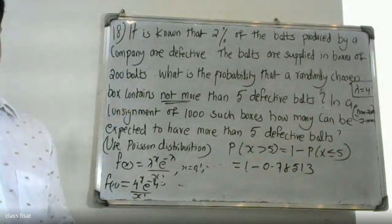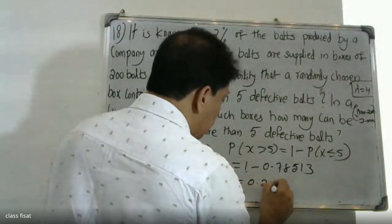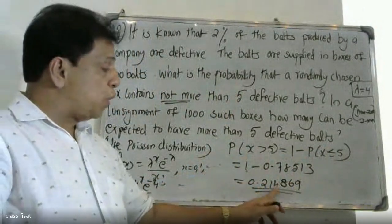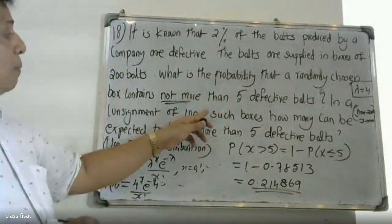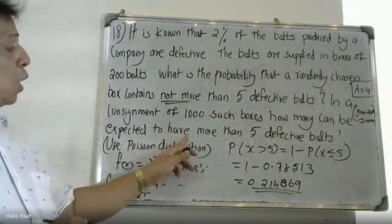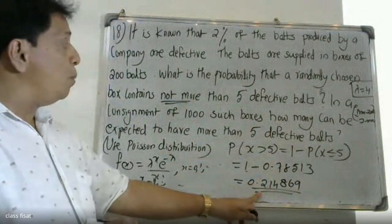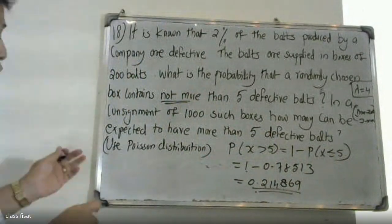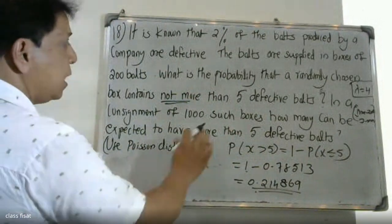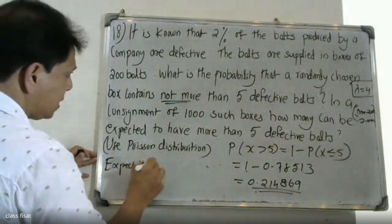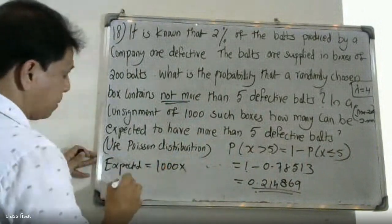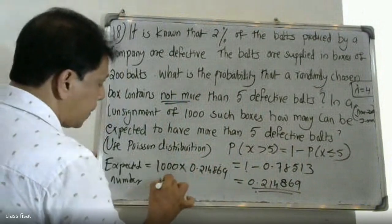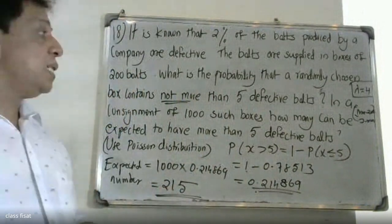So P(X > 5) = 1 − 0.78513 = 0.21487. The number of boxes expected to have more than 5 defective boards in a consignment of 1000 is 1000 × 0.21487, which is approximately 214.87, so about 215 boxes can be expected.